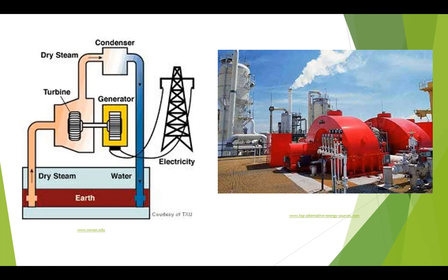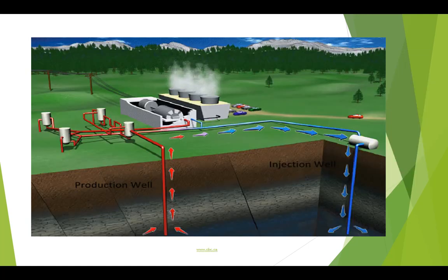From the turbine, the steam travels through a condenser and is often re-injected into the subterranean aquifer. These types of plants are less common due to the rare nature of suitable vapour-dominated resources. In a steam flash power plant, hot fluids reach the surface through a production well and are piped into a separator. The reduction in pressure causes some of the water to flash into steam, which is then fed through a turbine, condensed and re-injected for use again.